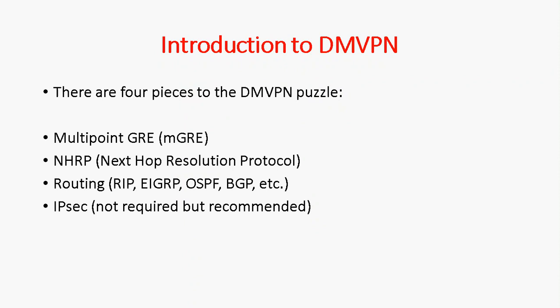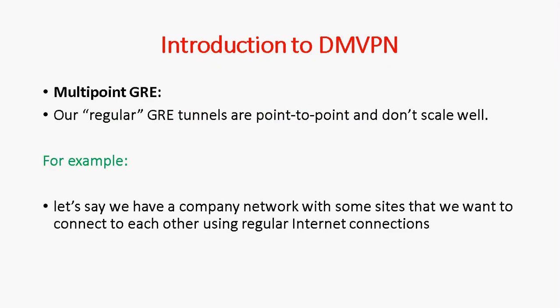For example, in a production network with one head office and two branch offices, both using internet connections, the data will be sent through a public network. In that case, IPSec is mandatory for securing our data. That's why it's recommended in production networks.